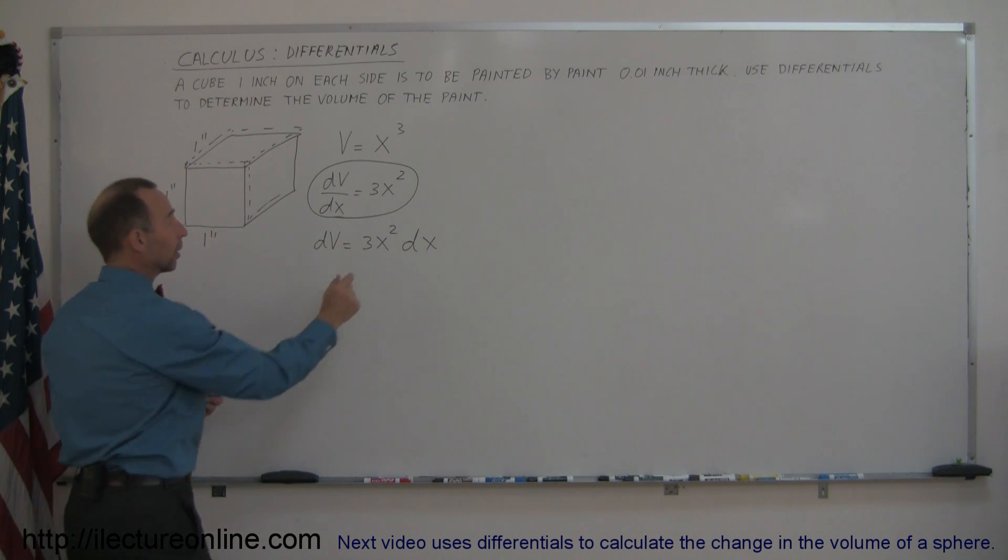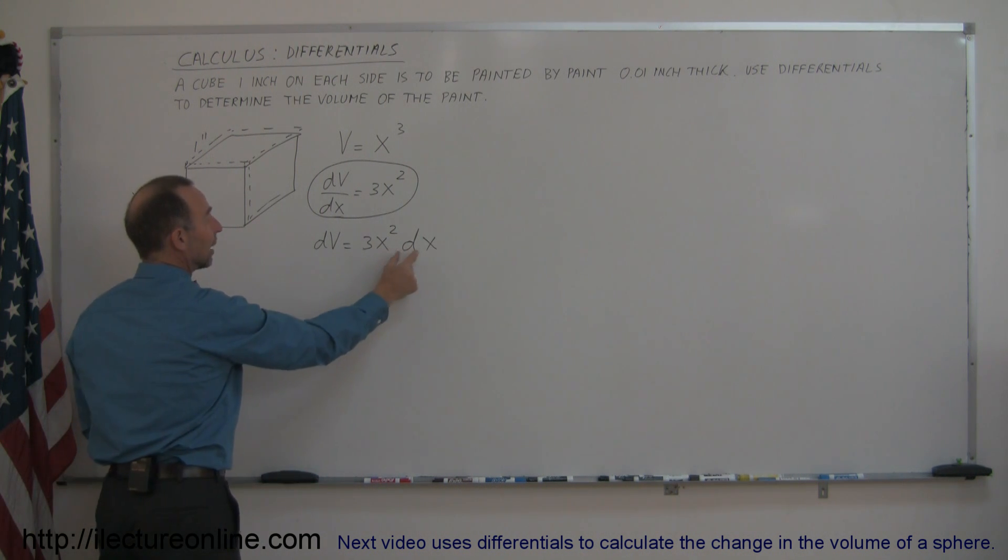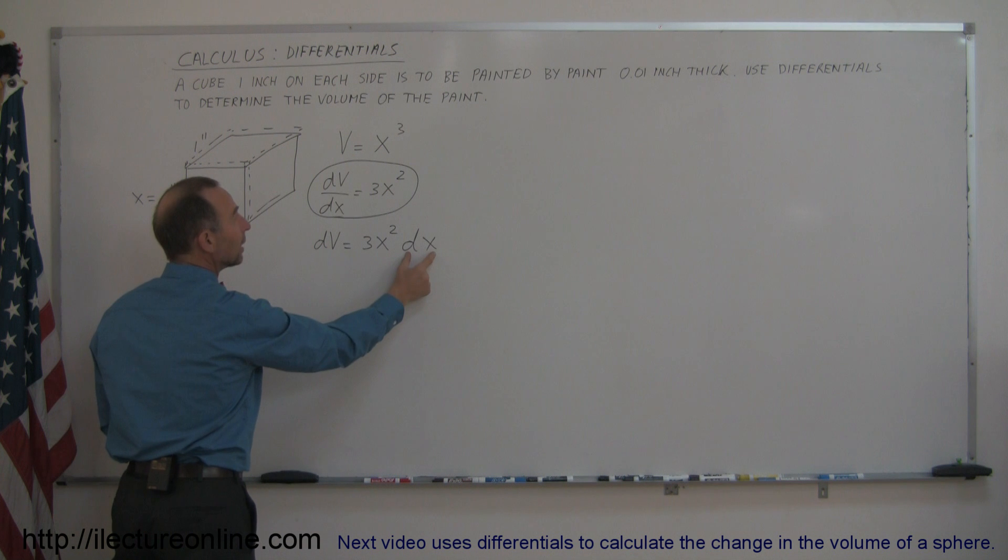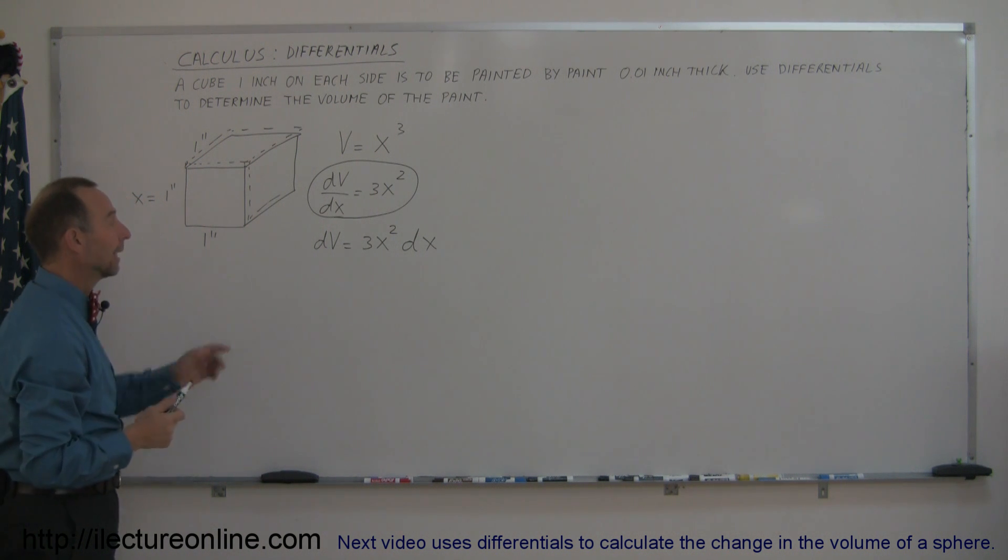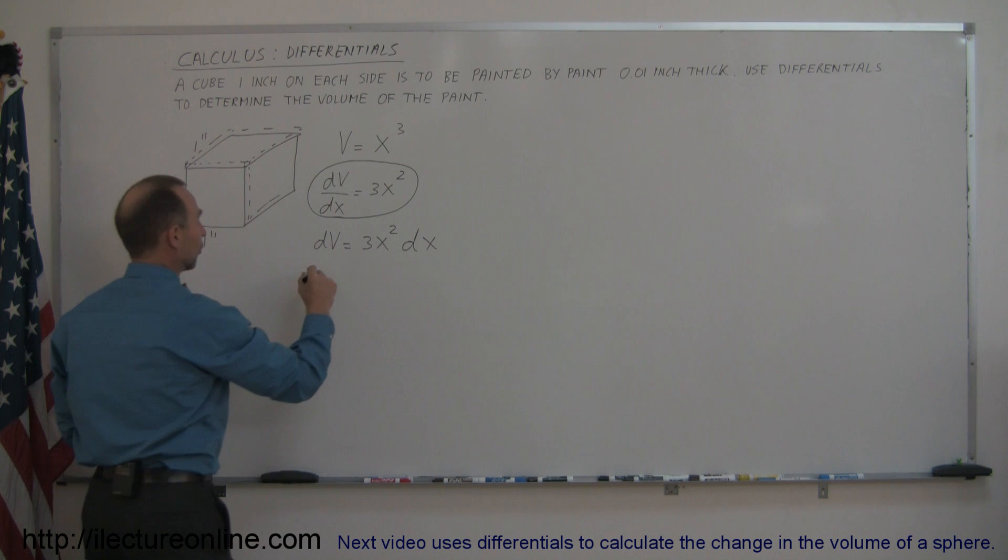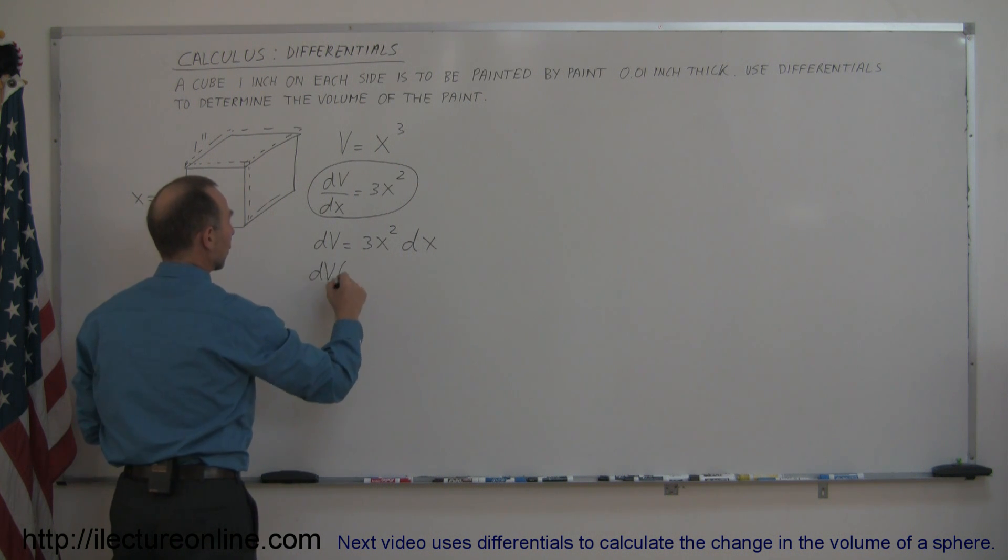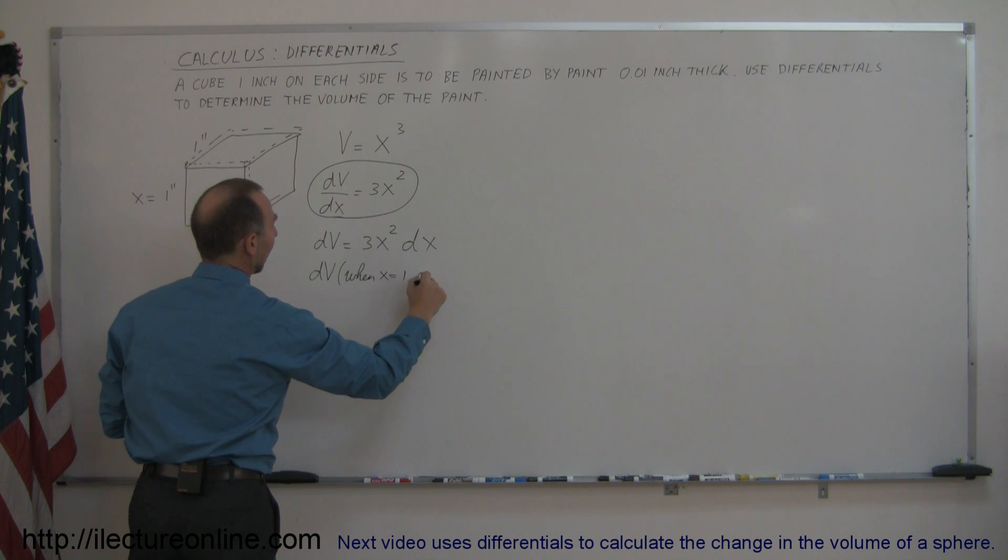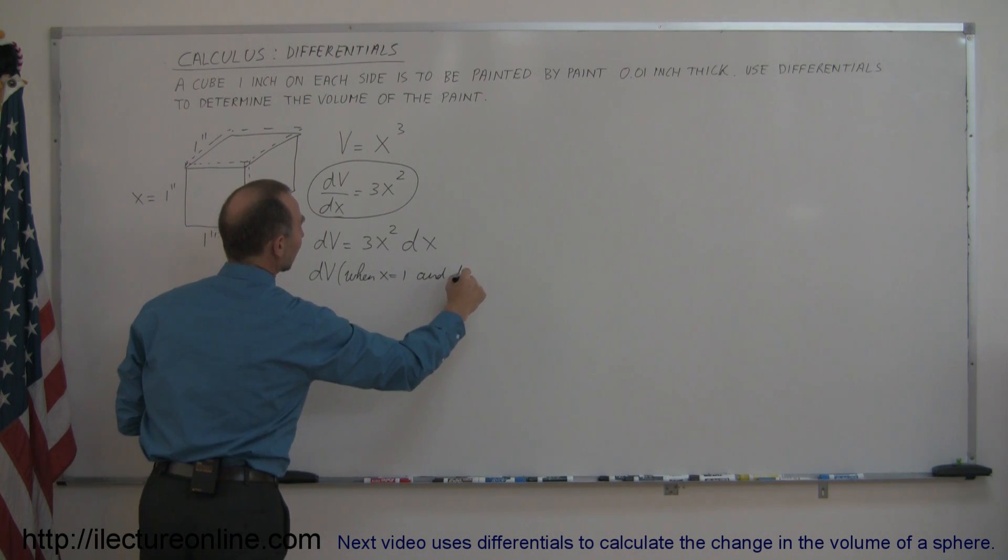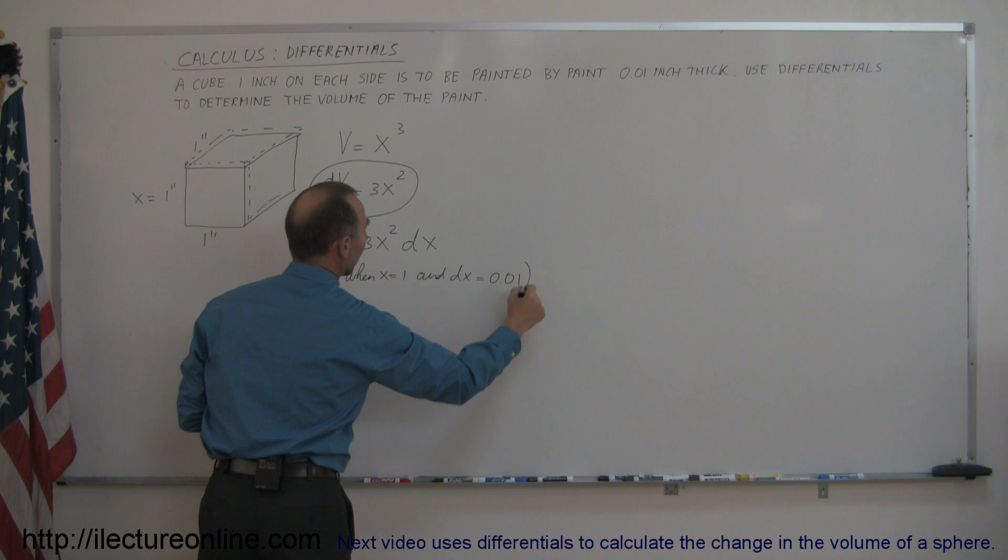So if I plug in 1 inch for x and 0.01 inches for the change in x, so I make the x a little bit bigger by using some paint, then I can figure out how much v changes. So dV when x is equal to 1 and dx is equal to 0.01.